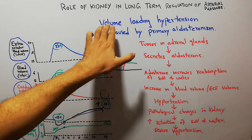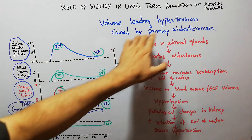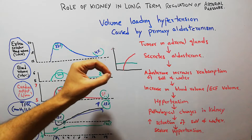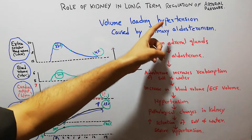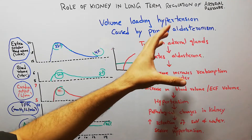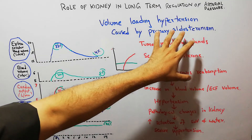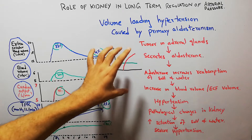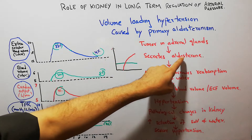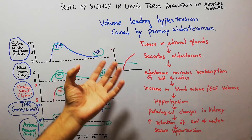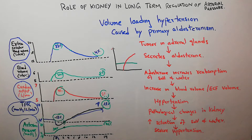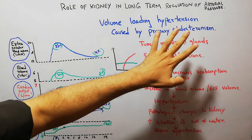Today we are going to discuss volume loading hypertension caused by primary aldosteronism. We will first discuss what aldosterone is, and then how it leads to volume loading hypertension and the sequence of events in aldosteronism.